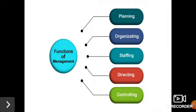The third function is staffing. The staffing process involves the selection of candidates for positions, fixing salary, training, and developing them for effective organizational functions. The manager performs duties of job analysis and job description under the staffing function. The fourth function is directing or leading, which involves guiding, supervising, communicating, and motivating subordinates in their jobs.